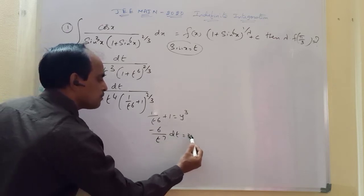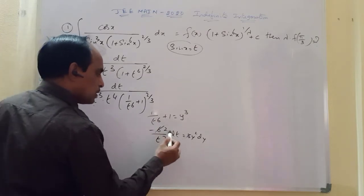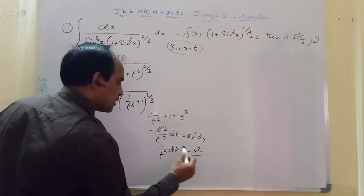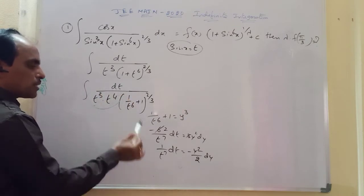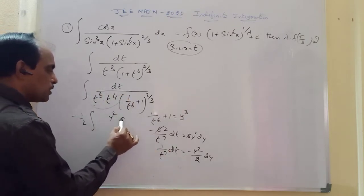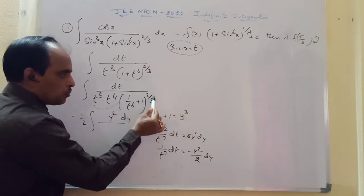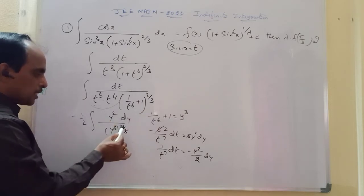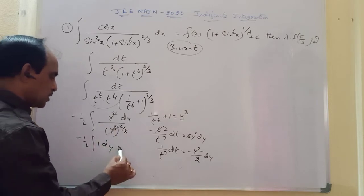With this substitution, dt is equal to 3y² dy. So 1/t⁷ dt equals minus y² by 2 dy. The y² in the numerator and denominator cancels out, and we are left with simply 1 dy — a straightforward integration.